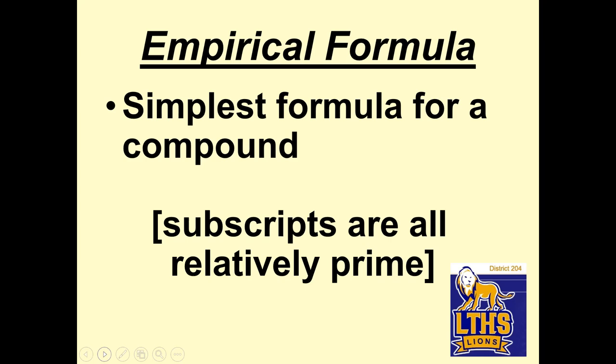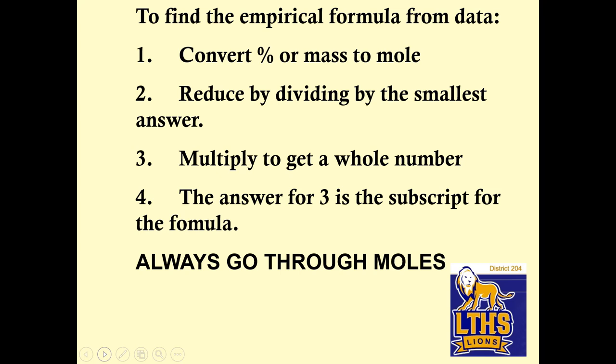Empirical formulas. This is the simplest formula for a compound. So that means the subscripts are all relatively prime. I want to say reduced, and that's probably what you would say to your friends. But relatively prime means they're as reduced as they can. So how do you do it? Define the empirical formula from data. So you're going to be given like 7 grams of nitrogen, 3 grams of hydrogen, 14 grams of carbon. And then you're going to convert those, whether it's masses to moles, or if it's percentages, which is if it's percent, you assume it's 100 grams. So if it's 100 grams, then you just turn it into grams to moles. So you're going to do that. You convert it to moles, and then you're going to get like some fraction-y weird number. You're going to reduce this number by dividing by the smallest answer. You're going to multiply to get a whole number.